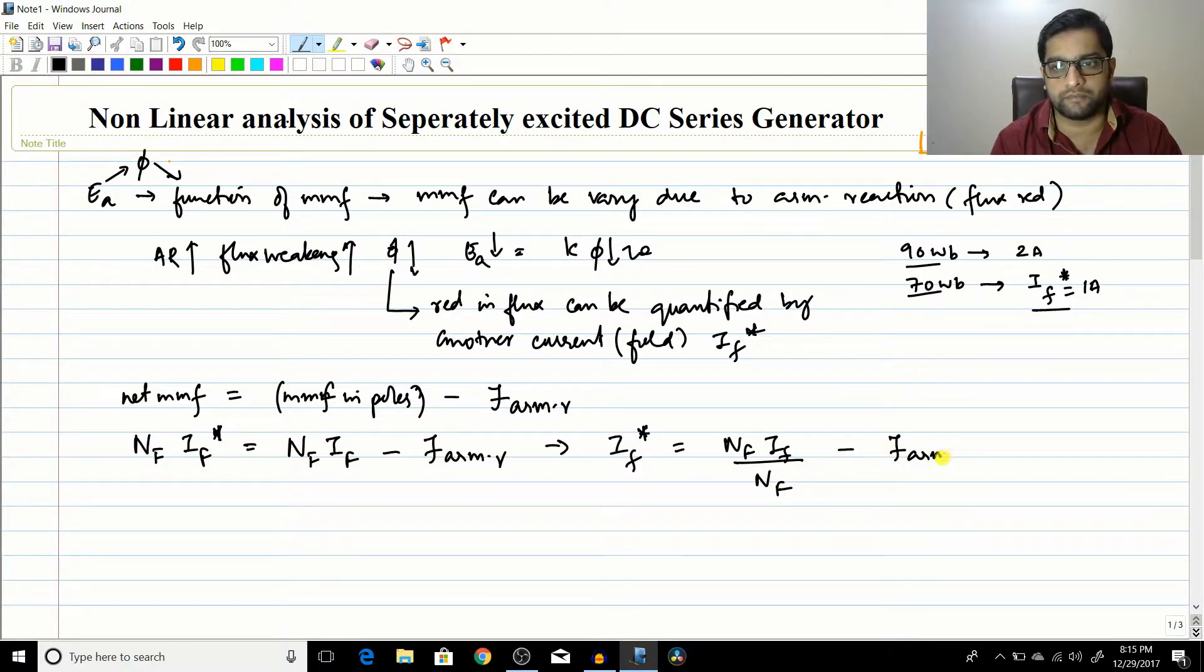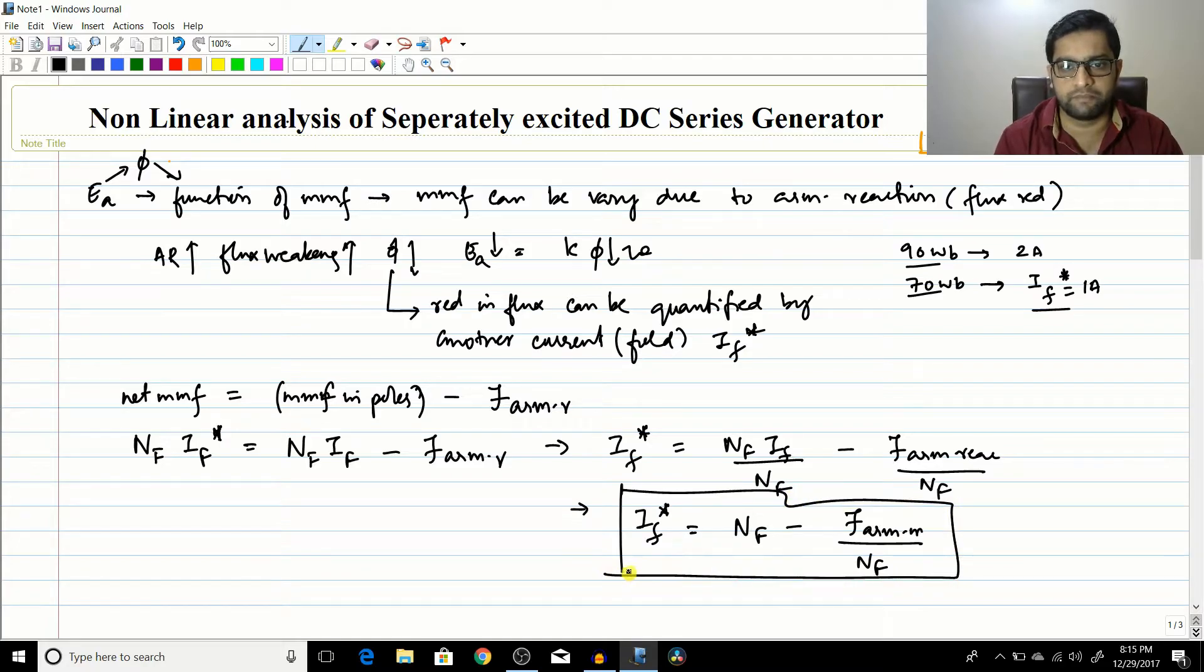That means this IF star value will be equal to NF into IF divided by NF minus MMF of armature reaction divided by NF. So it will be IF minus armature reaction MMF divided by NF. So the same relation what I have done is just I have repeated what I have done in the DC motor.